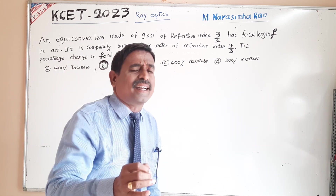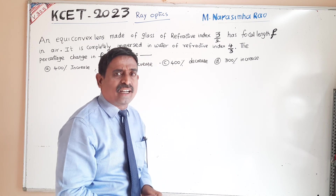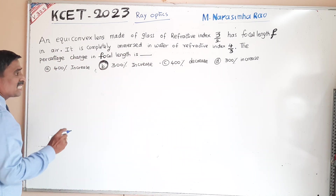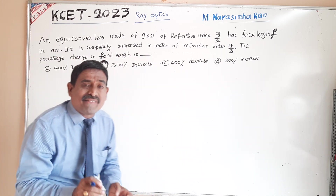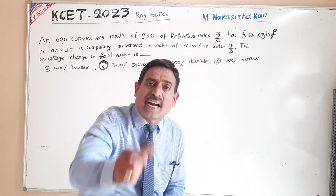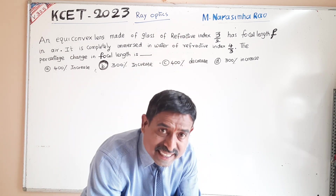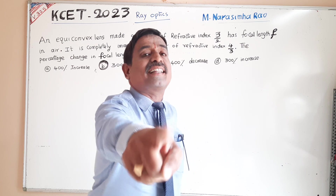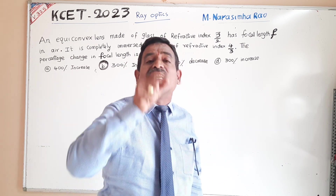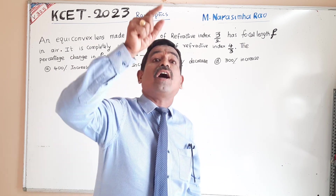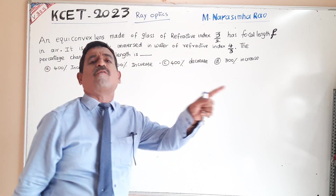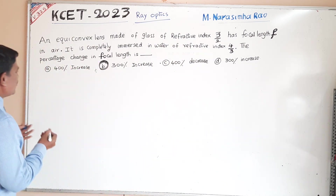There is a shortcut — a trick to solve this problem. Whenever a lens made of glass is immersed inside water of refractive index 4/3, the focal length becomes 4 times the original focal length.